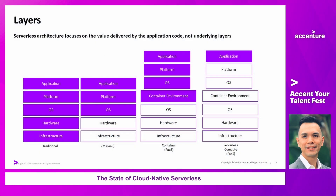To illustrate what I mean by that, let's look at the layers when you build your application. In a traditional on-premise bare metal environment, you own everything top to bottom — your applications, the platform it runs on, the OS, the hardware, the physical servers, and the infrastructure. When you move to the cloud or a more virtualized environment, you start to offload infrastructure and hardware to someone else, but you're still responsible for the top layer stack.